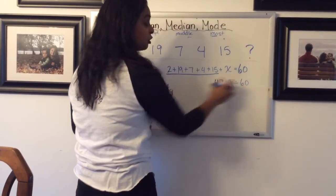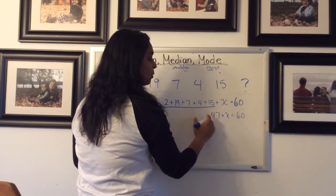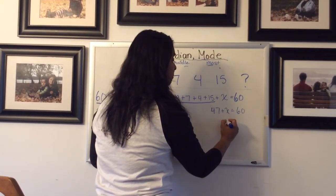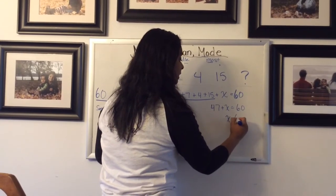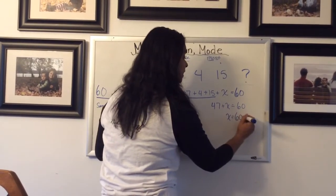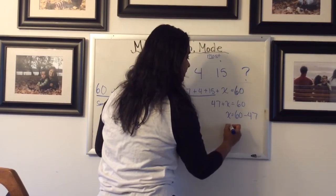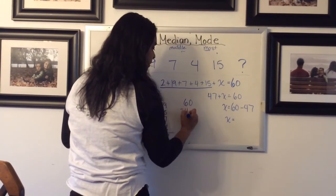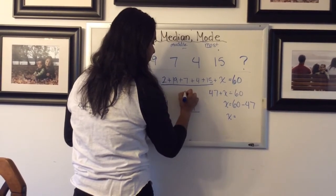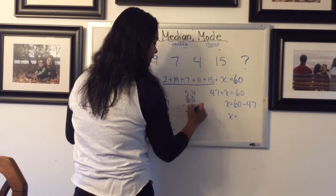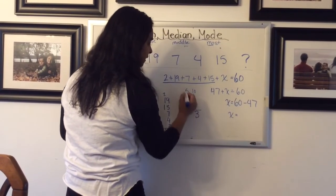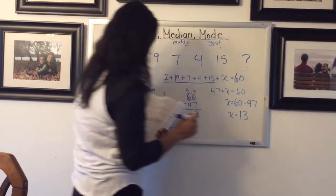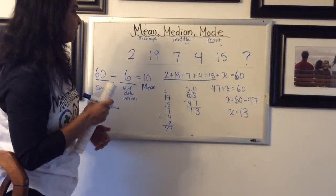So what I want to do then is use 47 plus X equals 60. And then this should remind you a bit of algebra. Now I want to use a fact family or get rid of that 47. So you're going to end up knowing that to find X, you'll have to take away the 47 from the 60. And again, I would recommend working in standard algorithm for this kind of thing. 10 take away 7 is 3. 5 take away 4 is 1, which means X is equal to 13.